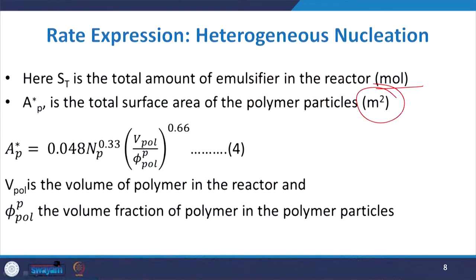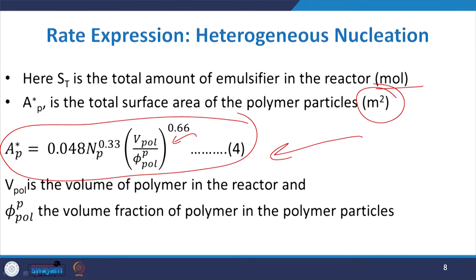Since A_P plays a vital role in deciding the rate expression, we need the A_P* equation: A_P* = 0.048 * N_P^0.33 * V_polymer / phi_polymer^0.66 (Equation 4), where V_polymer is the volume of polymer in the reactor and phi_polymer is the volume fraction of polymer in the polymer particles.